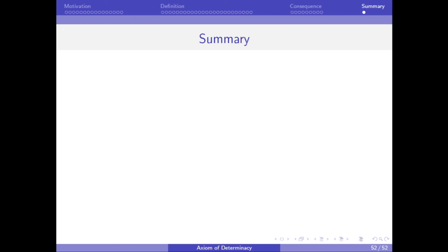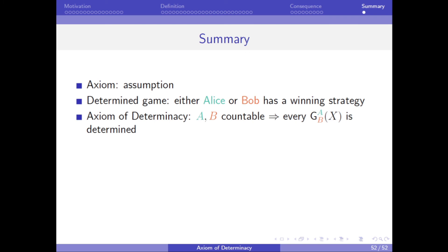So now I will summarize some of the main points of this video. First, an axiom is an assumption. And next, a determined game is a game where one of the players can ensure that they win. And the axiom of determinacy is the assumption that every game is determined if Alice and Bob can only make moves from a fixed countable set. And this assumption can be used to show that if Alice and Bob can only make moves from those fixed countable sets, then every set of plays has the perfect set property.